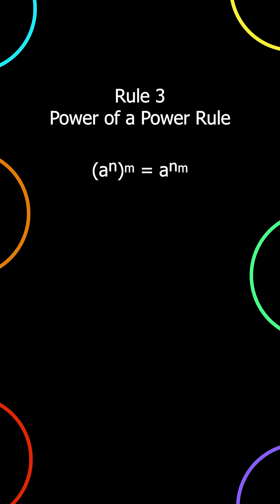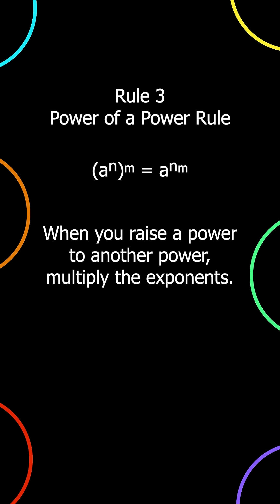Rule 3: Power of a power rule. a to the power of n, all raised to the power of m, is equal to a to the power of n times m. When you raise a power to another power, multiply the exponents. Example: x to the power of 2, all raised to the power of 3, is equal to x to the power of 6.